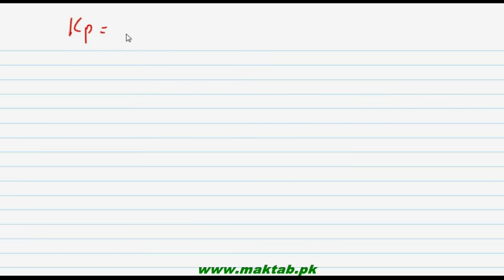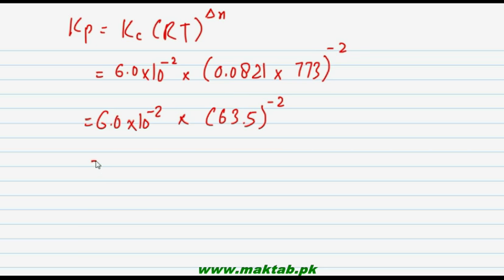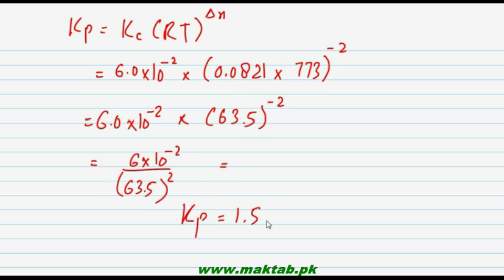Balanced equation سے: moles of products = 2 (NH3)، moles of reactants = 1 + 3 = 4۔ تو Δn = 2 − 4 = −2۔ Kp = 6.0 × 10⁻² × (0.0821 × 773)^(−2)۔ 0.0821 × 773 = 63.5، اور (63.5)^(−2) مطلب یہ value denominator میں آ جاتی ہے positive ہو کر۔ تو Kp = 6.0 × 10⁻² ÷ (63.5)² = 1.5 × 10⁻⁵۔